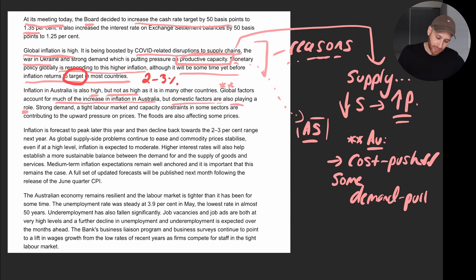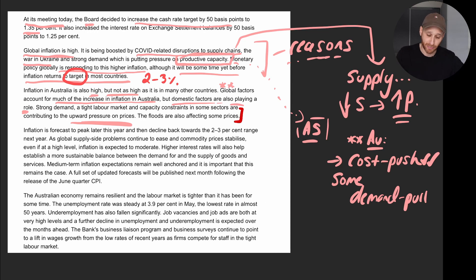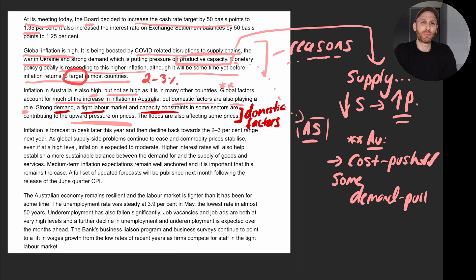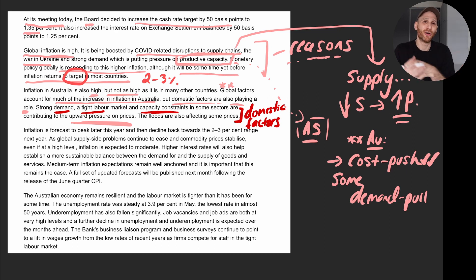Strong demand, a tight labour market, and capacity constraints in some sectors are contributing to upward pressure on prices. Looking at the domestic factors specifically: strong aggregate demand, a tight labour market, and capacity constraints — the inability to produce what's required or get things where they need to be — are all domestic factors leading to higher inflation.